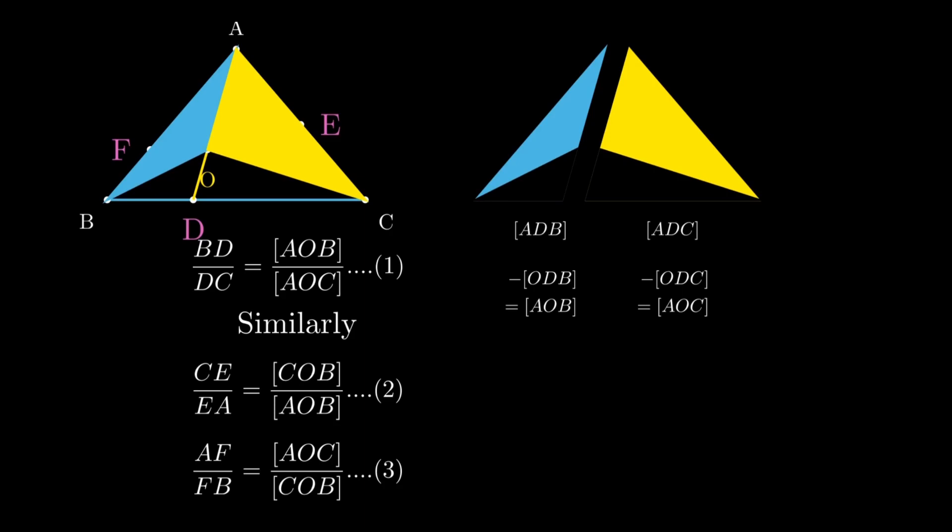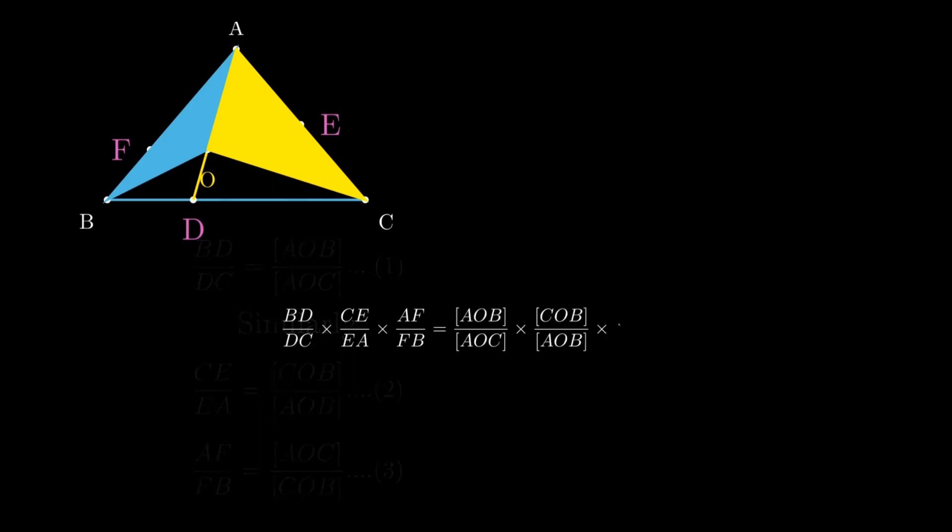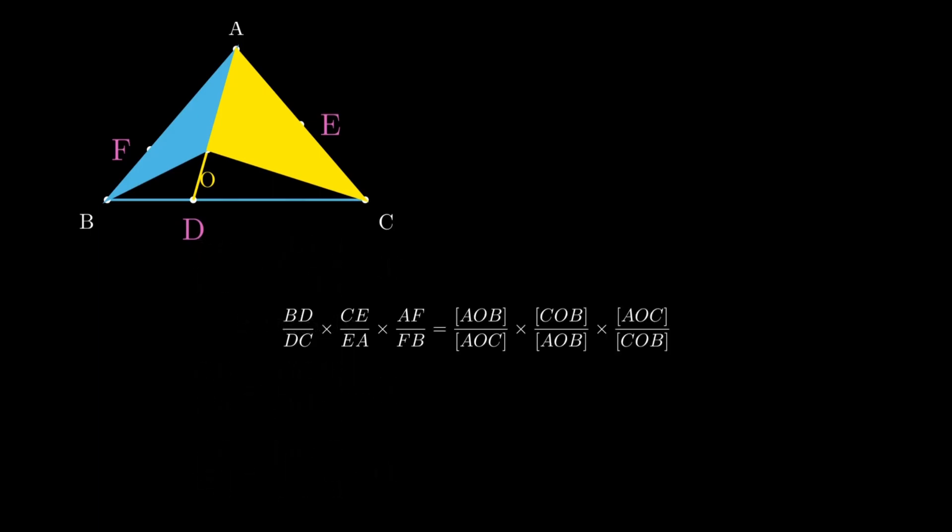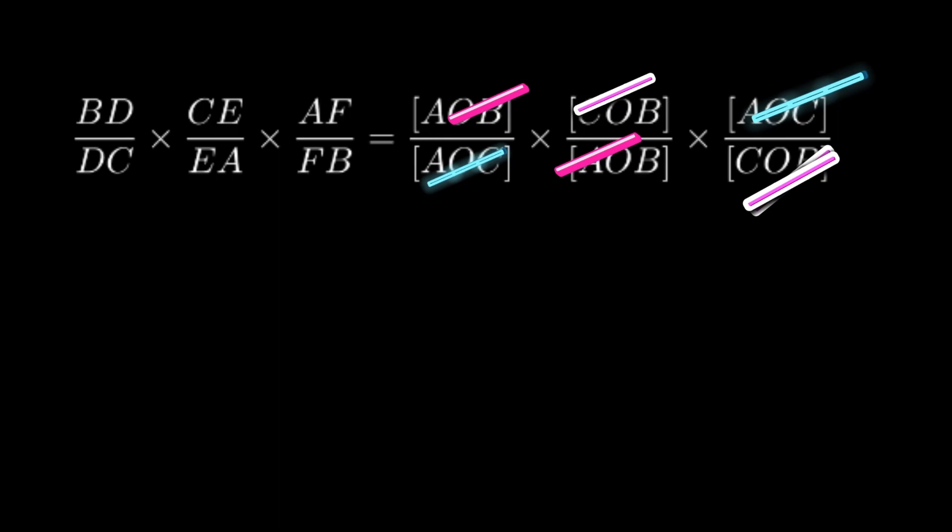If we just multiply out both sides, you will see that the right-hand side will cancel off and you will just have the number one. So AOB will cancel off with AOB. COB will cancel off with COB. AOC will cancel off with AOC. And you will have BD over DC, CE over EA, AF over FB equals to 1.